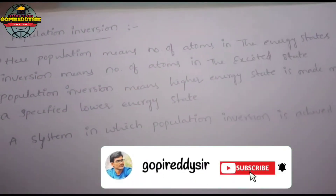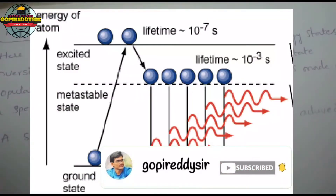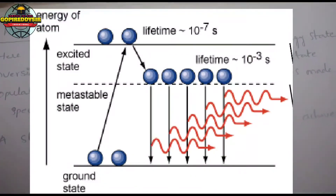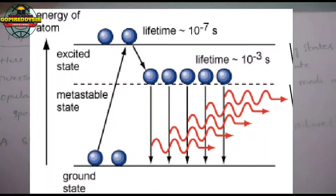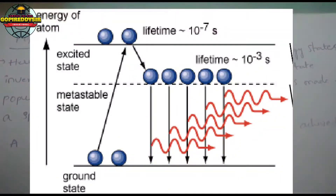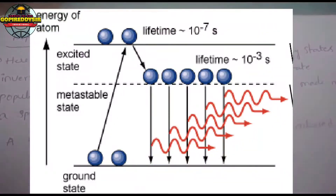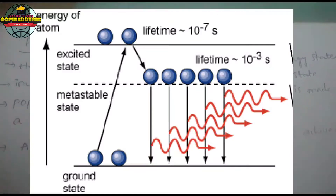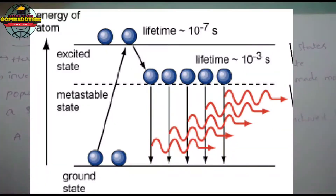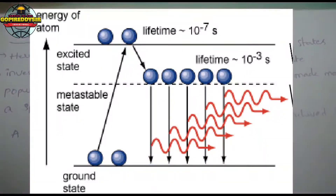We are discussing population inversion. Population means the number of atoms in the energy states. Population inversion is a process where the population of particles in higher energy states is made greater than that of a specified lower energy state. When the number of particles in the higher energy state equals those in the lower energy state, that is also considered population inversion.